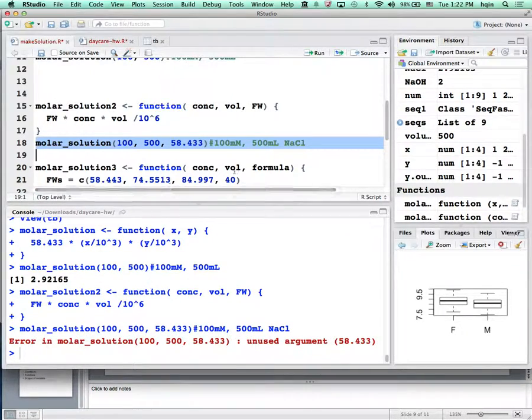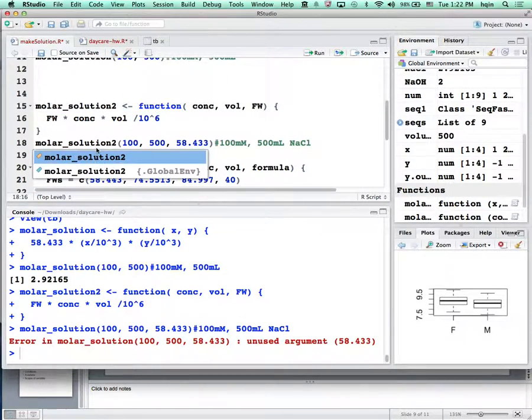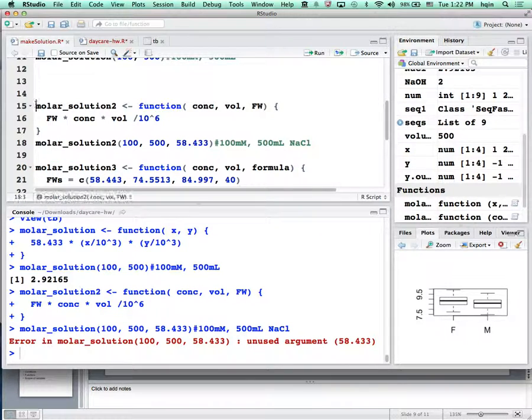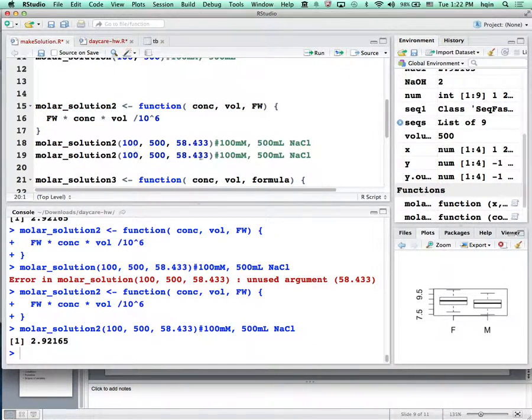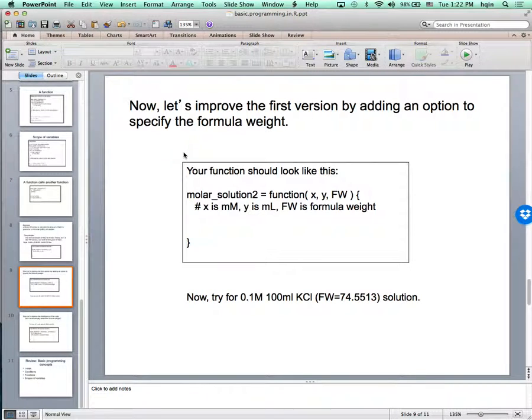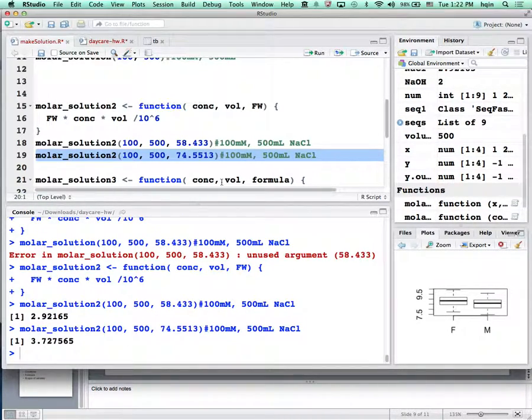That's not right—I mistyped. I missed the 2. Let me correct that. Now it gives 2.92, the same as before. But now if I change to potassium chloride at 74.5513, it gives me the amount of potassium chloride needed. My second version is a little better.